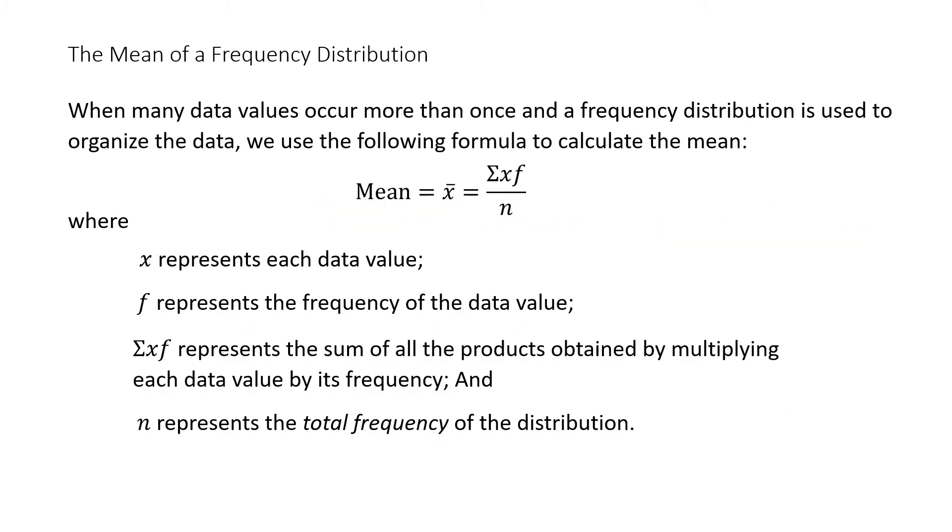The mean of a frequency distribution. When many data occur more than once and a frequency distribution is used to organize the data, we use the following formula to calculate the mean. The mean is still equal to x-bar and that is equal to the sum of the product of x times f, all of that divided by n, where x represents each data value, f represents the frequency of the sum of all products obtained by multiplying each data value by its frequency and n represents the total frequency of the distribution.